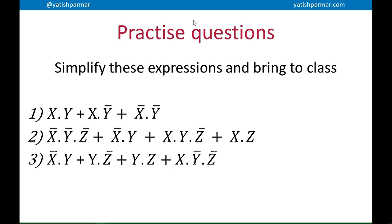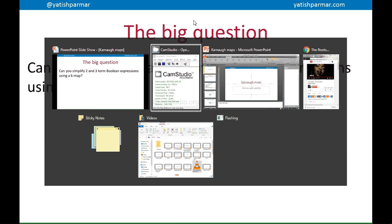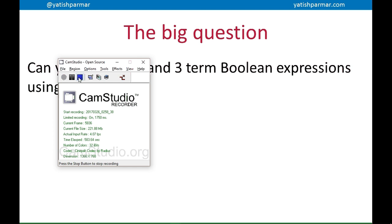So basically, what you need to do now is you need to simplify these three expressions and you bring them to class. And we will be going through them in the lesson when you come in. And if you've done all of this successfully, you should be able to simplify two and three term Boolean expressions using a K-map. And that's me done.